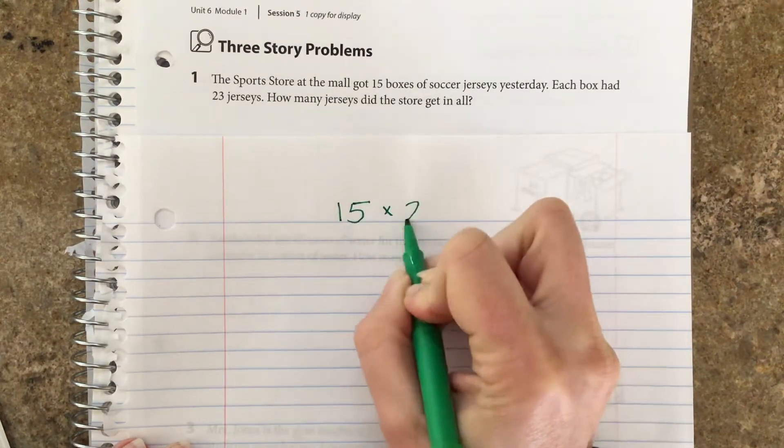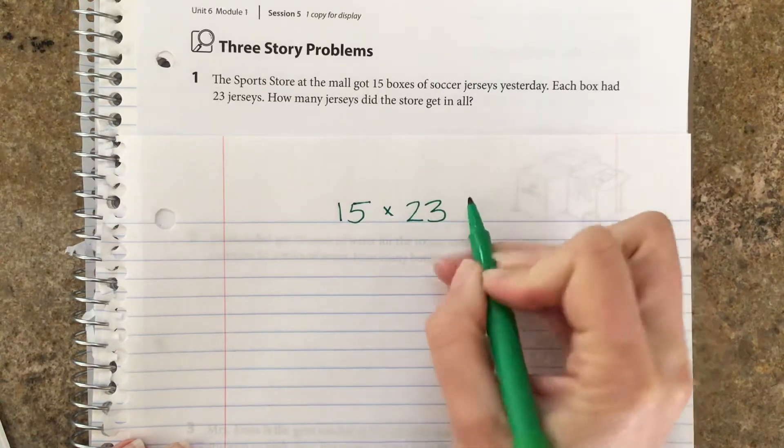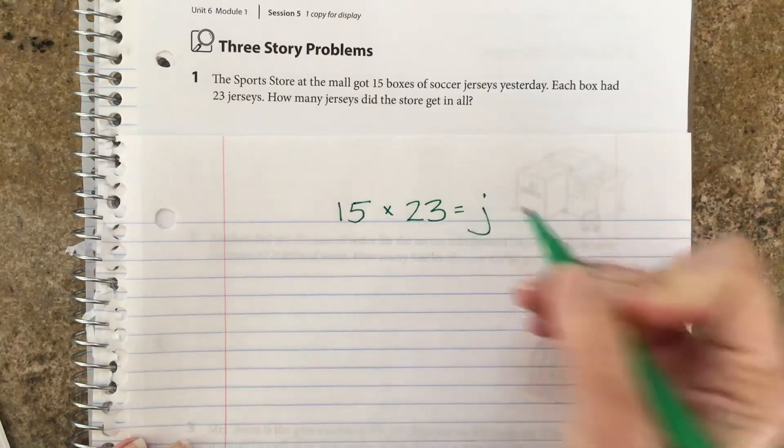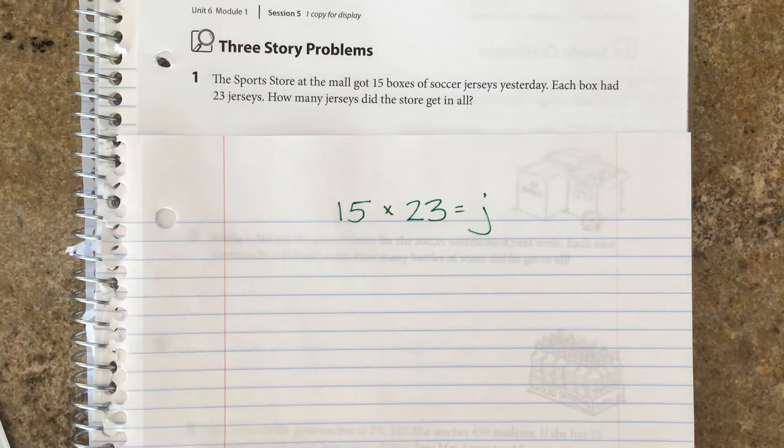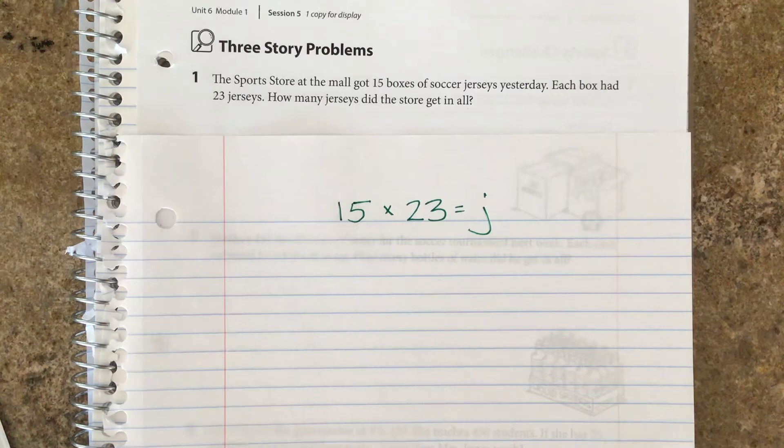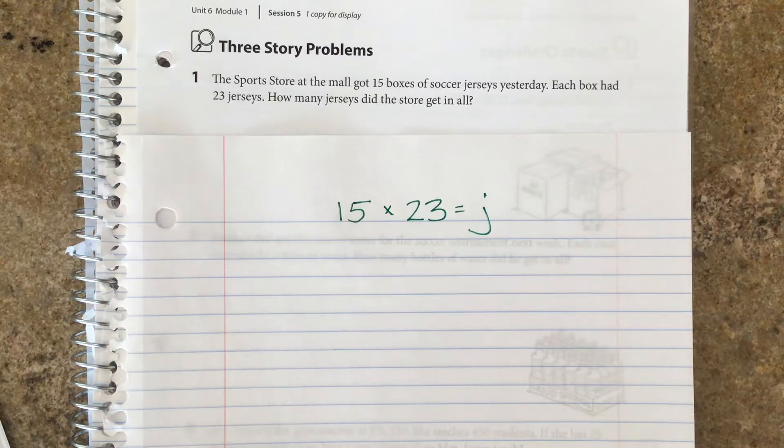So we're going to go ahead with this being our equation: 15 times 23 equals J, and we're going to use the letter J for jerseys. Before you solve the problem, I want you to think about in your head how you could estimate what would be a reasonable guess for your answer, so that when you do get your answer you know if it's in the ballpark of being correct.